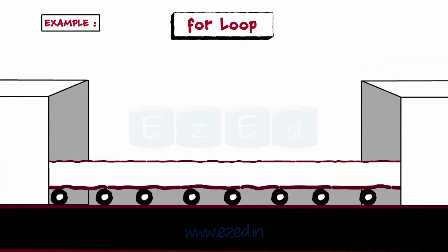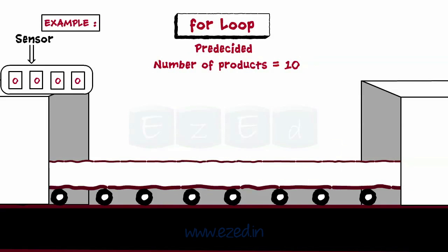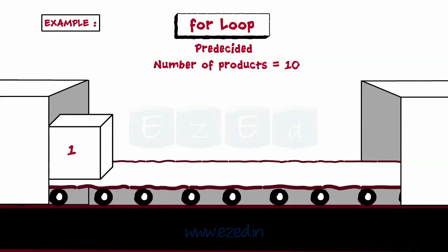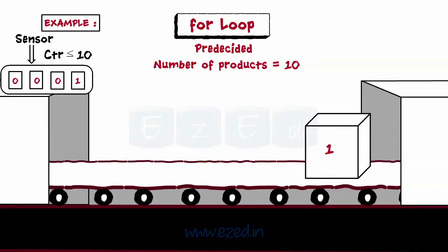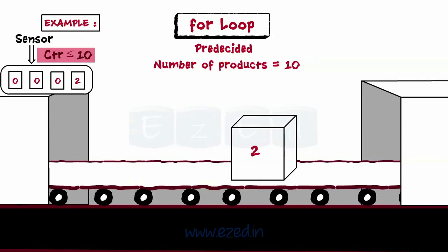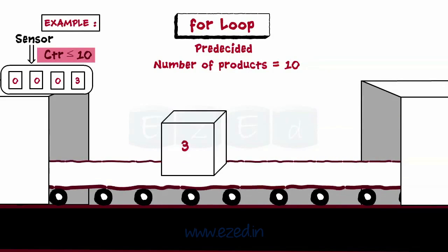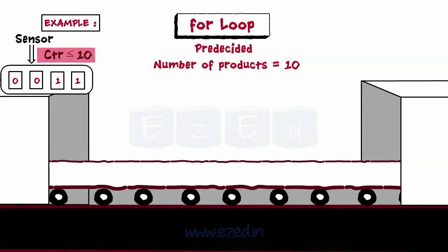Let's take the conveyor example to understand the for loop. It is pre-decided that the number of products to be processed is 10. The sensor keeps a track on the counter's value whether it has reached 10 or not. When the first product is placed on the conveyor, the counter is set to 1. The sensor tests the condition by checking if counter value is less than 10. As counter value is 1, the product is allowed to move on the conveyor for packaging. Then the counter is incremented to allow the next product. Again, the test condition is evaluated to check if the counter is not equal to 10. This process continues till the counter reaches 10. The sensor won't allow the 11th product to move on the conveyor as the condition has become false.